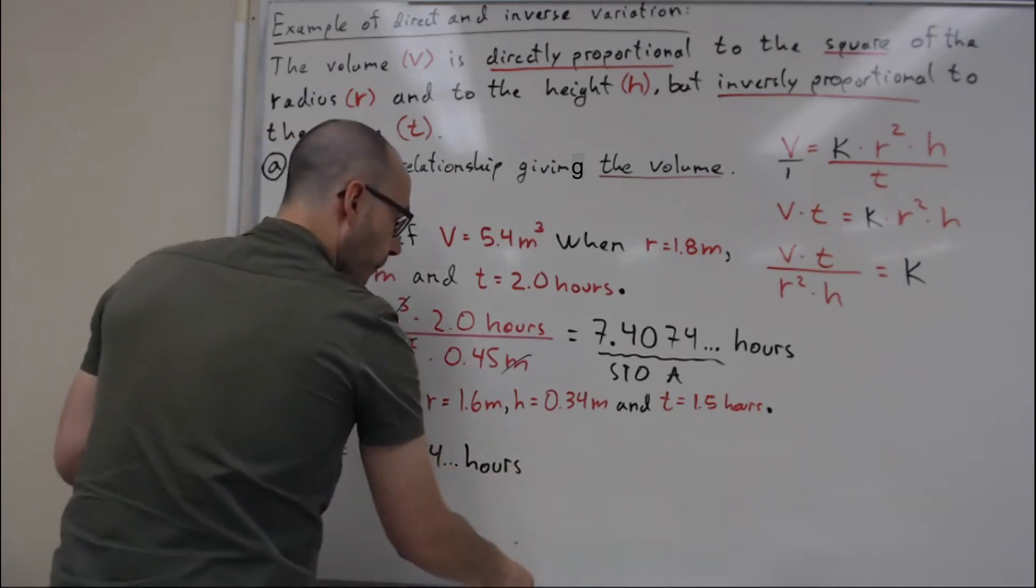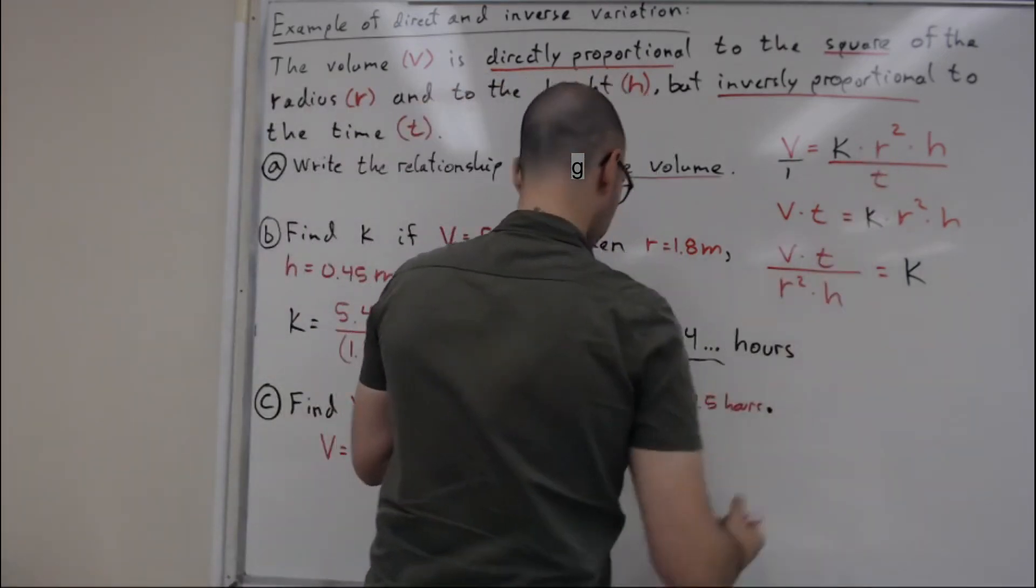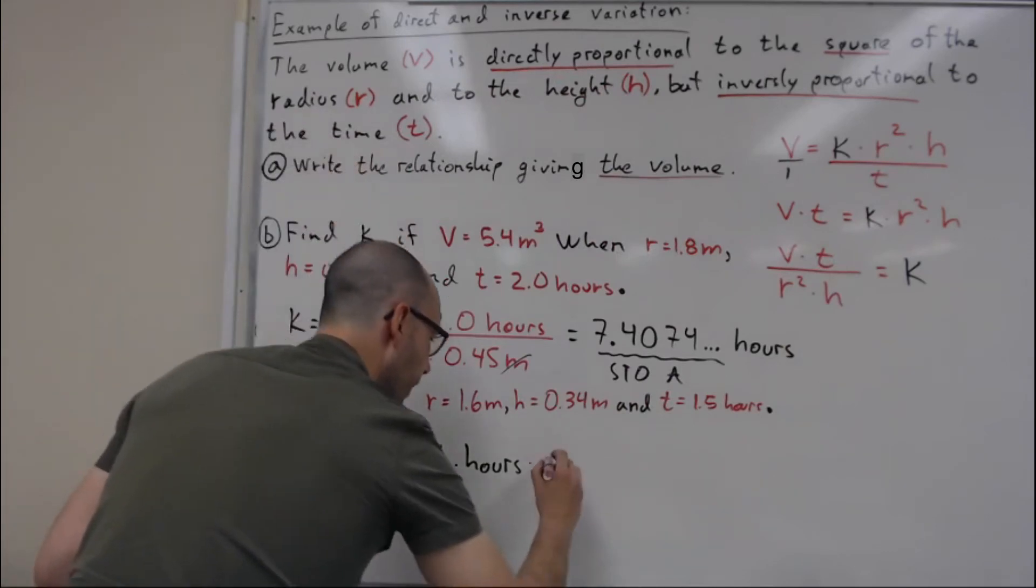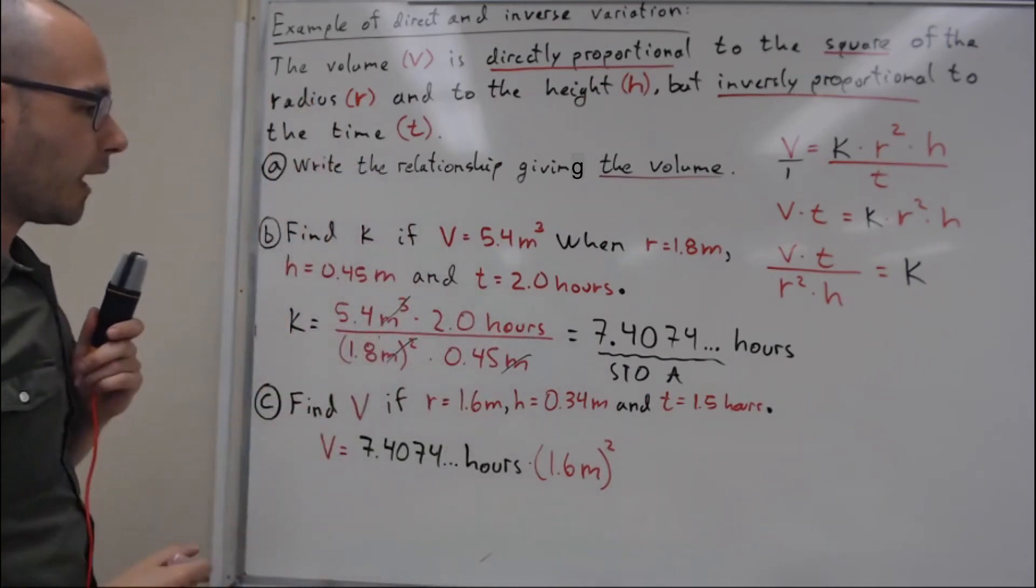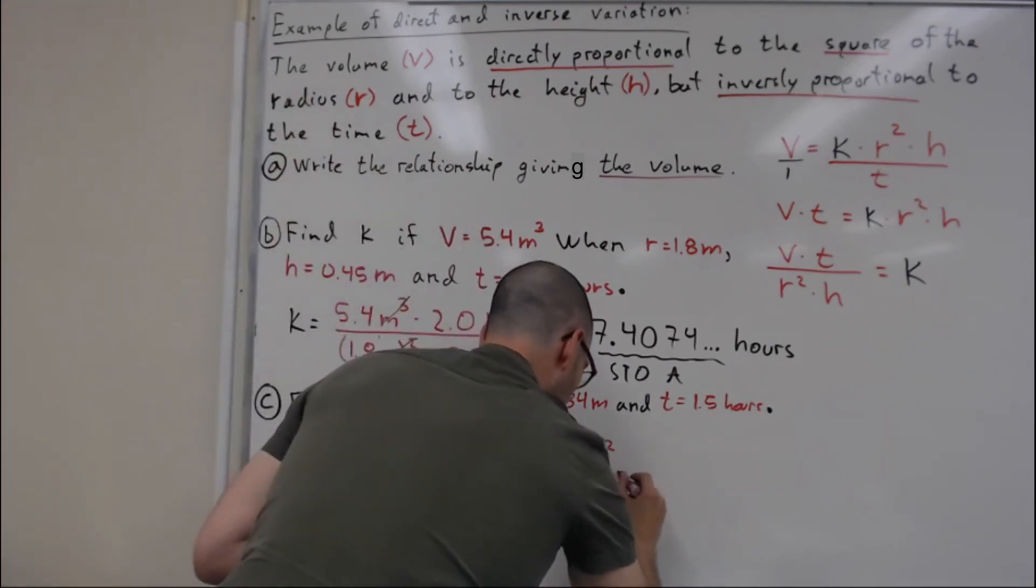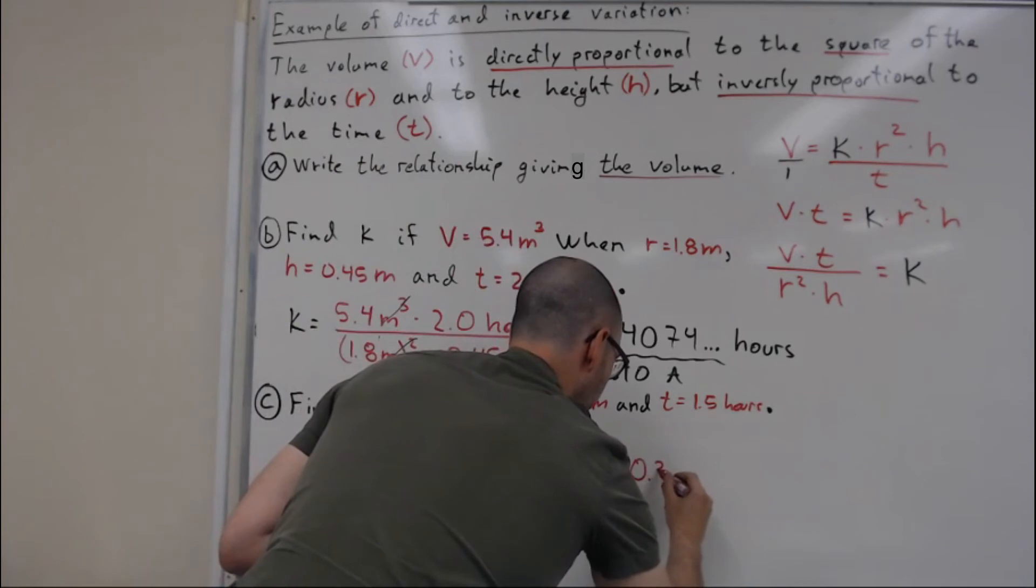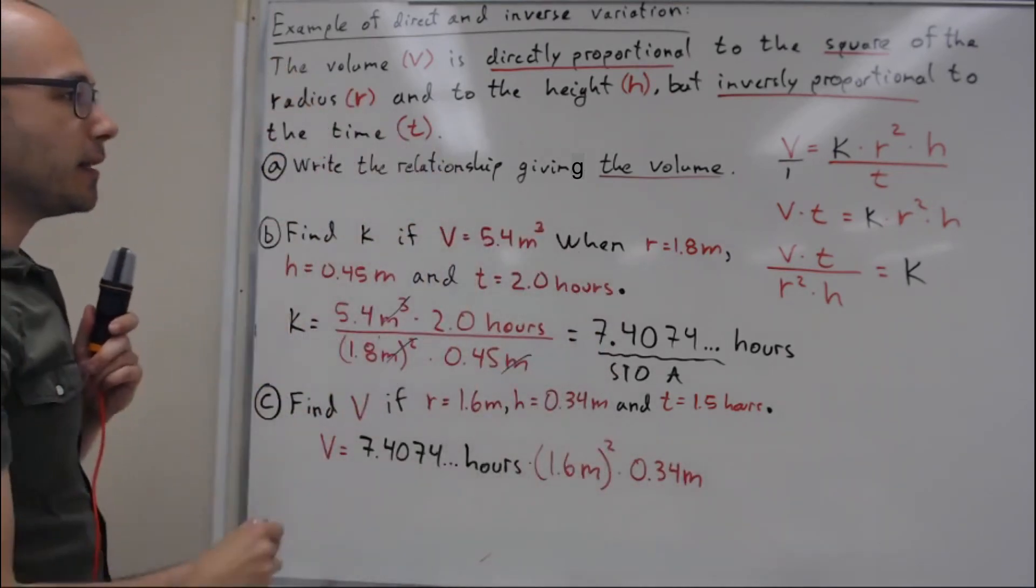Multiplied by r squared, which is 1.6 meter squared, multiplied by h which is 0.34 meters, divided by t which is 1.5 hours.